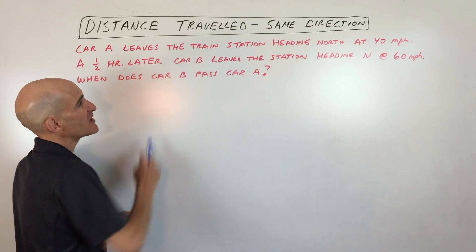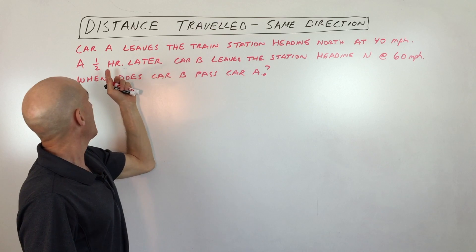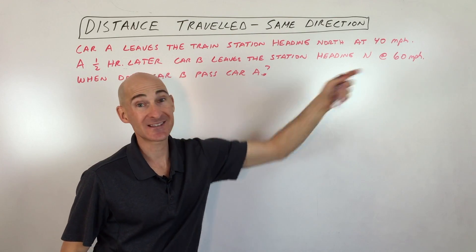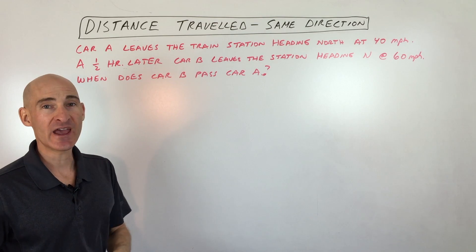Car A leaves the train station heading north at 40 miles per hour. A half hour later, car B leaves the same train station heading north at 60 miles per hour. When does car B pass car A?